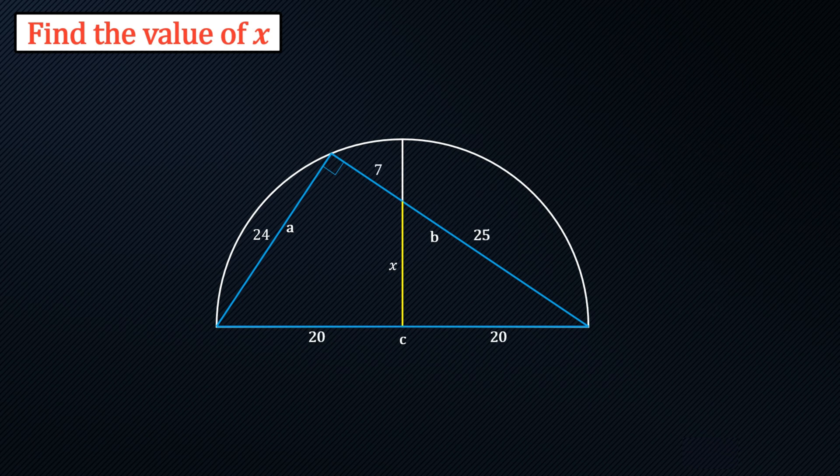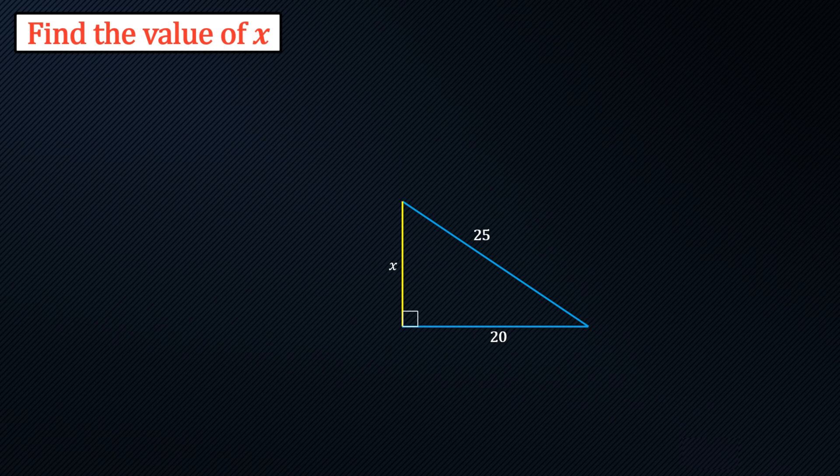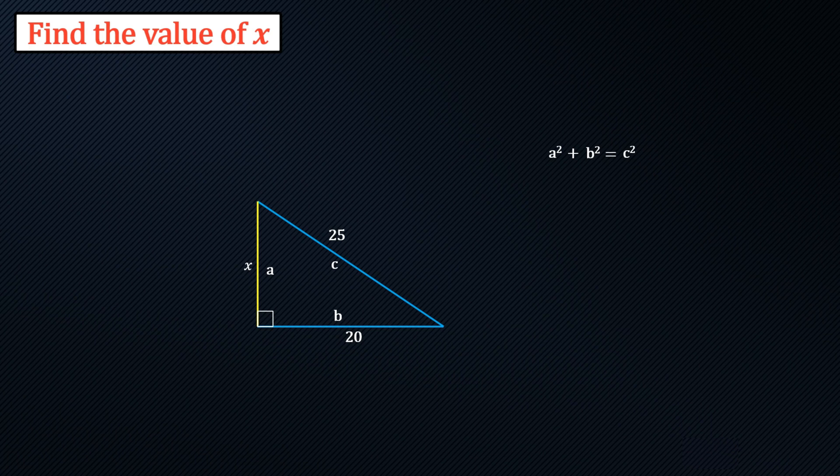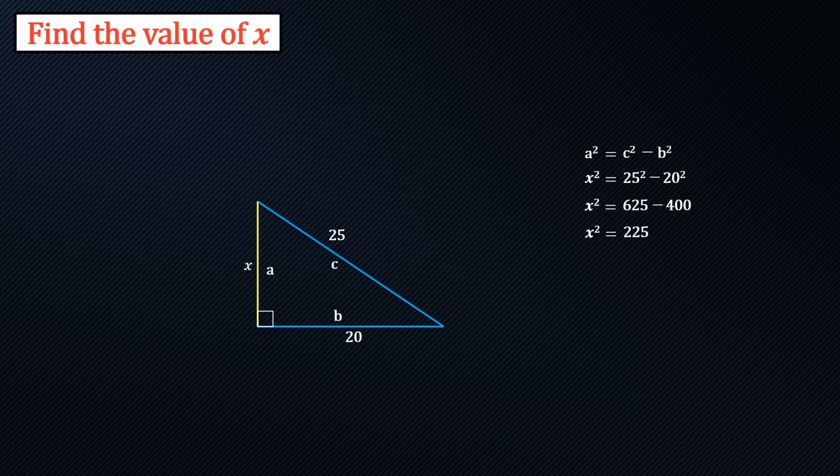Now we can look at the small triangle again and once again another right triangle. So we can solve for x by using Pythagoras again so that's a squared plus b squared equals c squared and because we're looking for a squared that is c squared minus b squared so it's 25 squared minus 20 squared which is 225. Take the square root so x is 15.